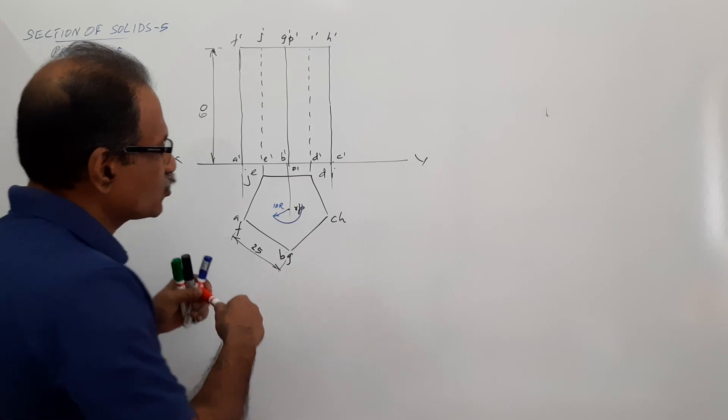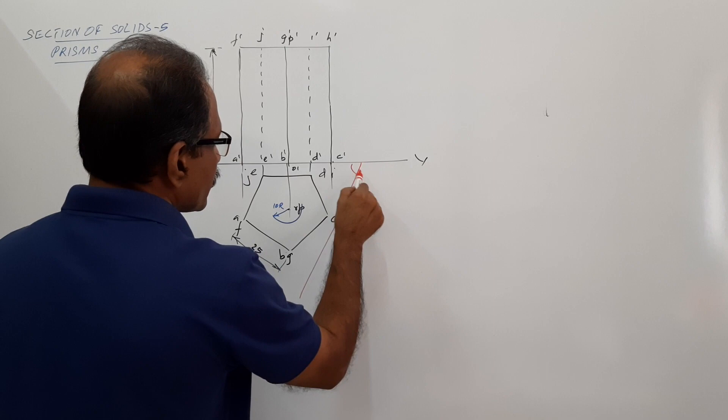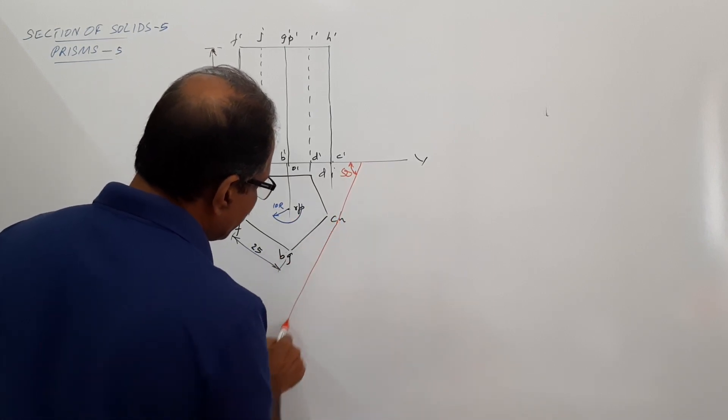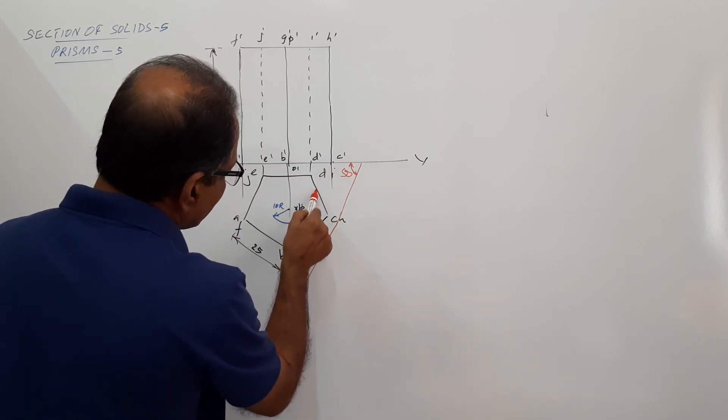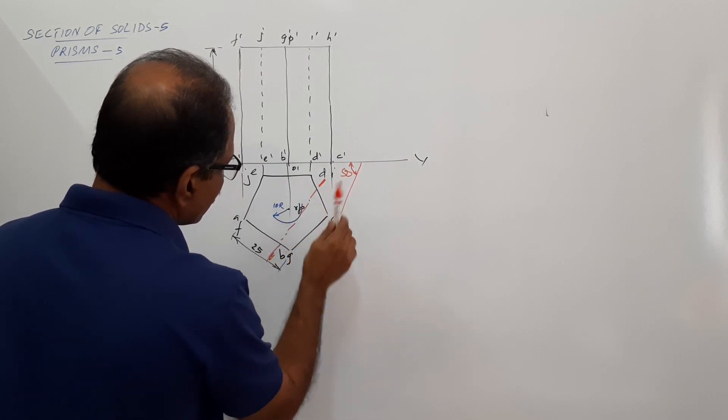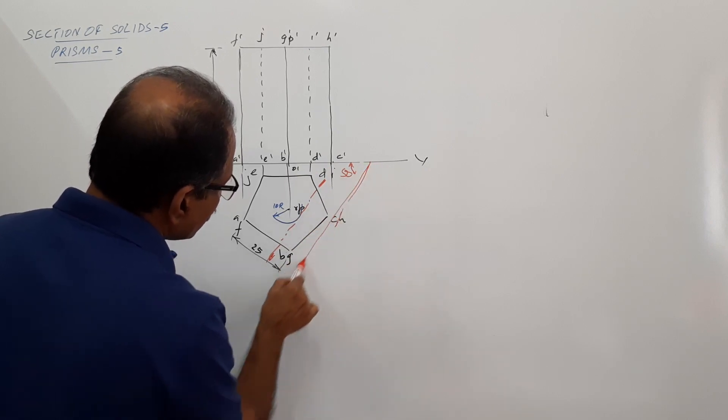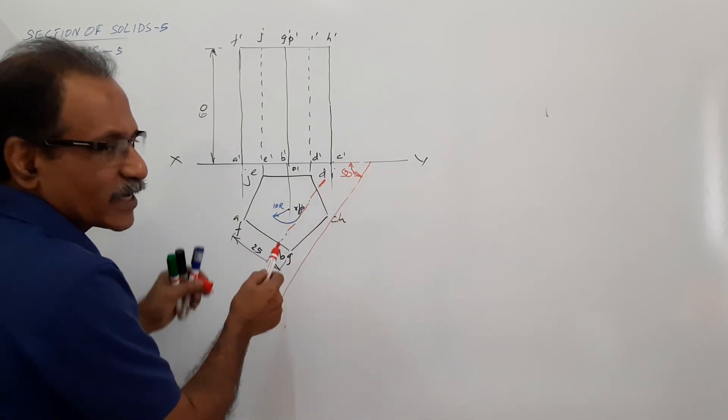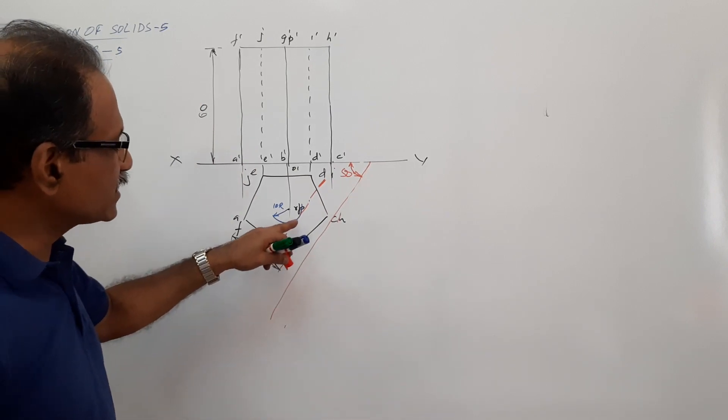For that, you draw somewhere on XY line, draw a 50 degree line. Then parallel to this line, you draw the cutting plane. Draw the 50 degree line, and parallel to the line you draw the cutting plane so that it is tangential to this arc.